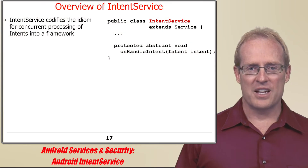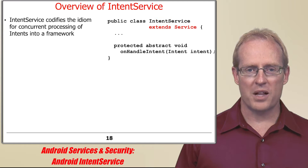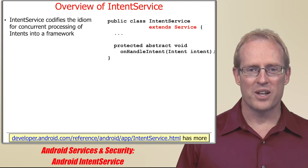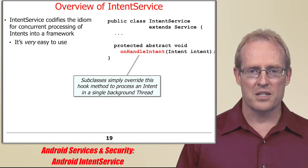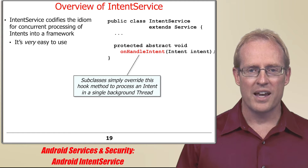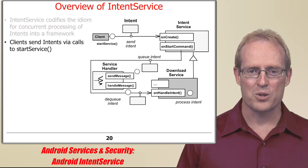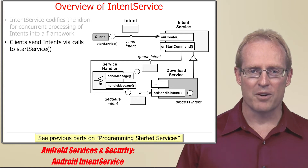Now that we've analyzed Android's idiom for concurrent processing of intents, we'll show how this idiom is codified by the Android Intent Service, which is a subclass of service that provides a started service framework for concurrently processing asynchronous commands expressed as intents. The intent service framework is easy to use, since subclasses simply override its onHandleIntent hook method and provide the logic for processing an intent in a single background thread. The typical use case for the intent service is also straightforward, as we'll show using a variant of the download service covered in the previous video.